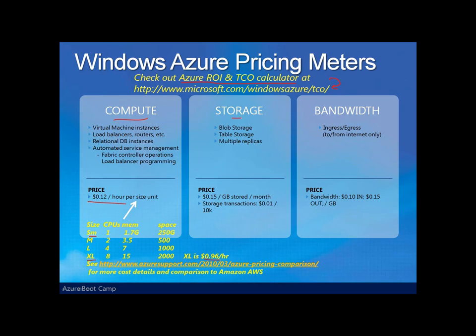Storage — blob, queue, and tables — are priced per gigabyte, starting at 15 cents per gigabyte per month. Transactions are also charged: per 10,000 transactions into and out of data storage, you're talking about an additional cent. We also have to deal with bandwidth — that is, the amount of information, ingress and egress, to and from the applications — and that's based on 10 cents in and 15 cents out per gigabyte.